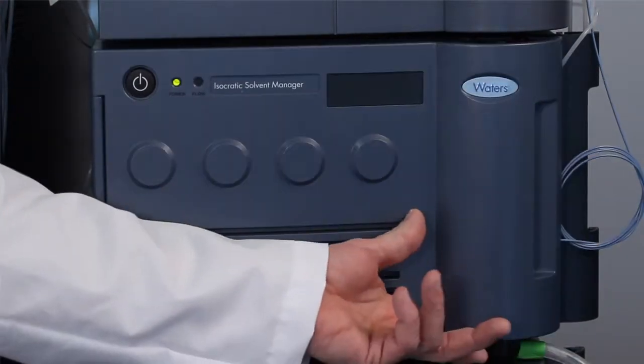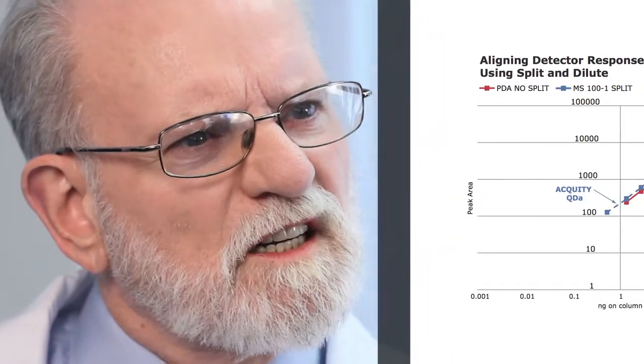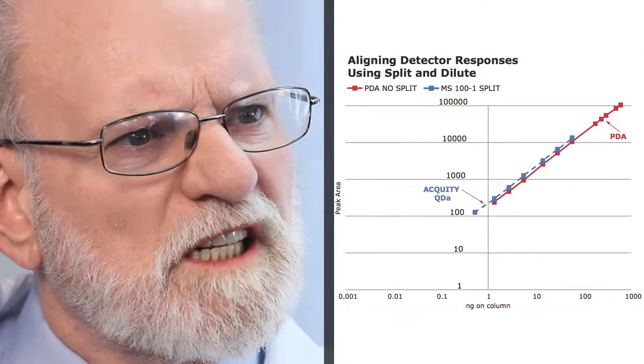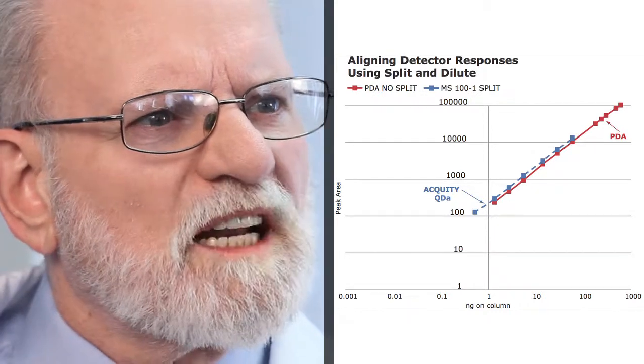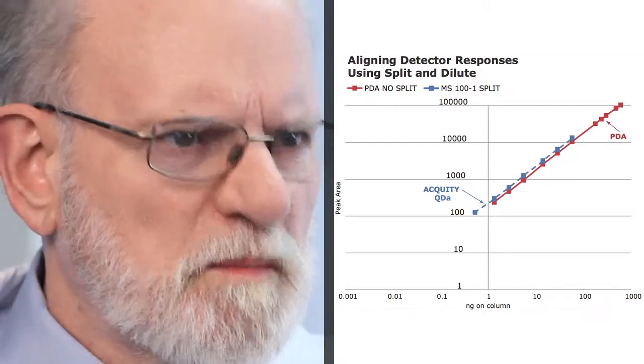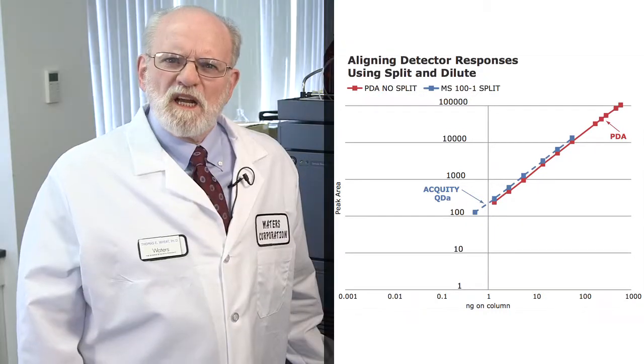With the use of the split and dilute modules, the linear dynamic range of the mass detector is now shifted to higher concentrations so that it more closely aligns with the PDA detector. Now that we have successfully aligned sensitivity between the MS and PDA, an additional option is available to optimize detection.